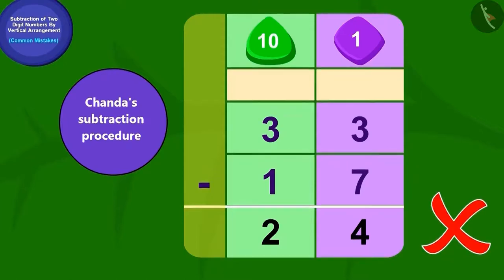Absolutely correct. Chanda's answer is wrong. While subtracting, Chanda subtracted three ones of 33 from seven ones of 17. Is this the correct procedure? While subtracting, we should subtract the digit of the smaller number from the digit of the larger number. Did Chanda do this while subtracting? Chanda subtracted the bigger number from the smaller number. That's why Chanda's answer is wrong.